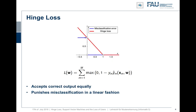The hinge loss is a special loss function — you could say it is a relaxation of the non-convex 0-1 loss. The 0-1 loss counts a loss of 1 for every misclassification and discounts every correct classification to 0. Unfortunately, this is a non-convex optimization problem that is difficult to solve, and the hinge loss, denoted here in red, is a convex relaxation to this problem.